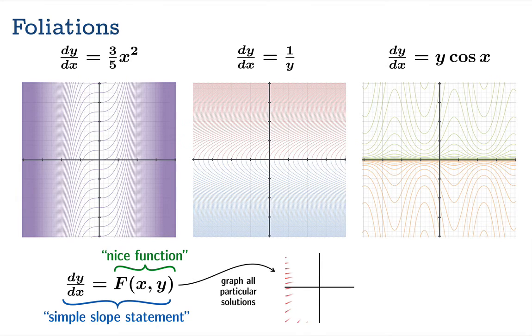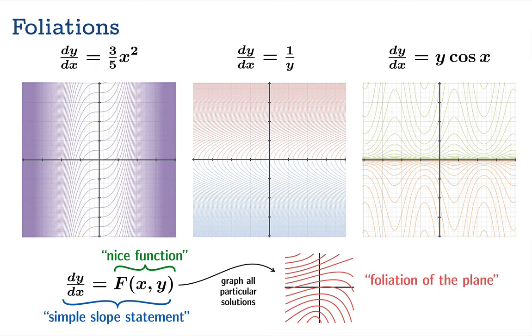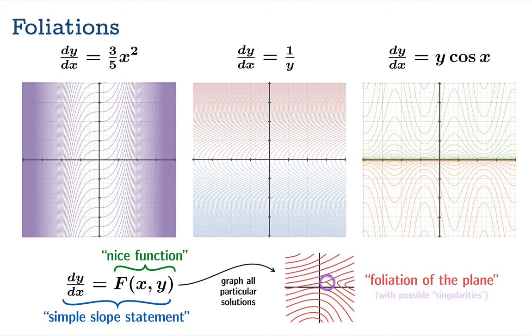Anytime you have a differential equation that is a simple slope statement, when you plot all the particular solutions you're going to get this nice pattern where these lines flow together, don't clash into each other, and fill up the plane. This is called a foliation of the plane. Actually you can have some exceptional points where some solutions run into each other - these are called singularities. You should encounter these when you plot families of solutions on your own. This general pattern is something we should expect.